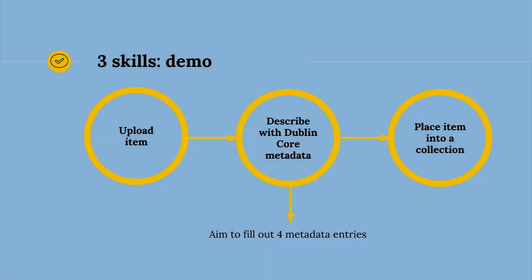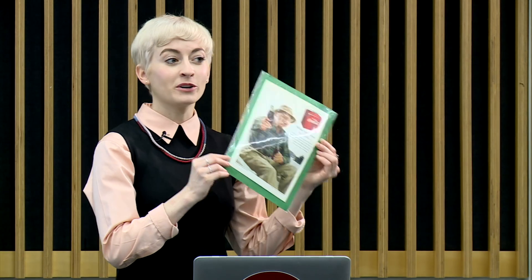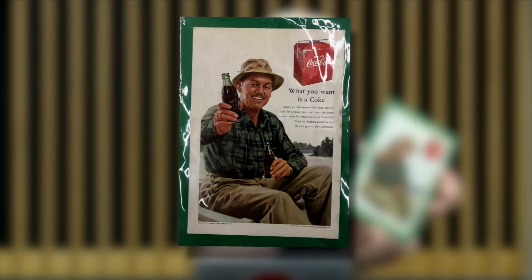Now that we've covered an introduction of what Omeka is and what it can do, I'll do a basic demonstration. This utilises our three key learning objectives: I'll upload an item to a site, describe it with Dublin Core metadata, and then place the item into a collection. In today's demonstration, I'm going to upload a digitised version of a 1952 piece of Coca-Cola advertising memorabilia.